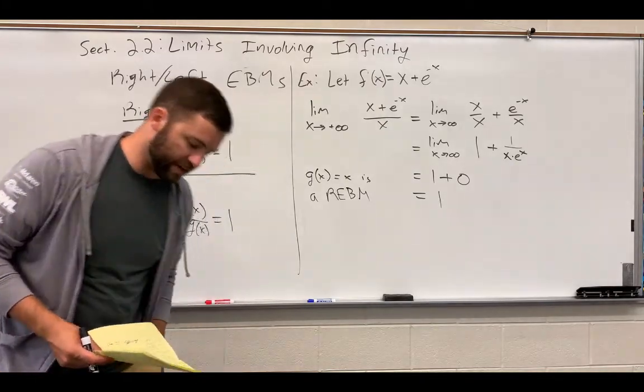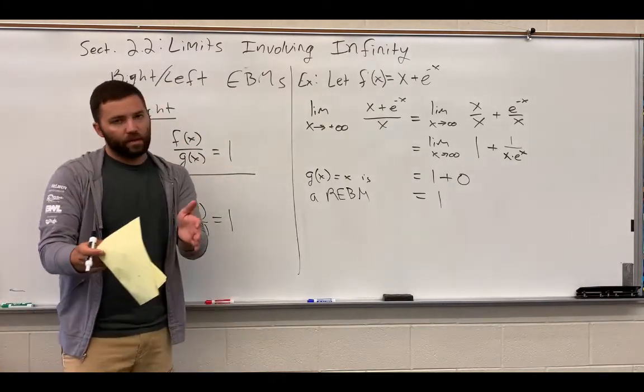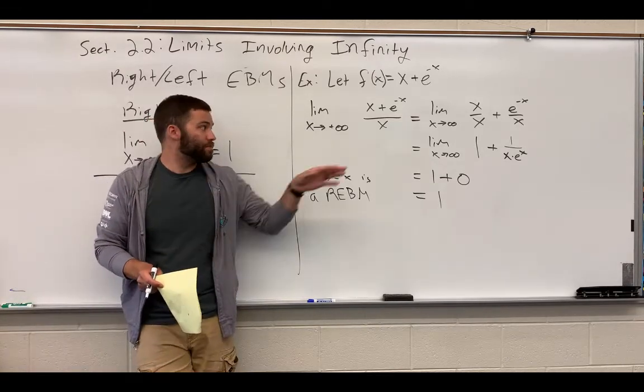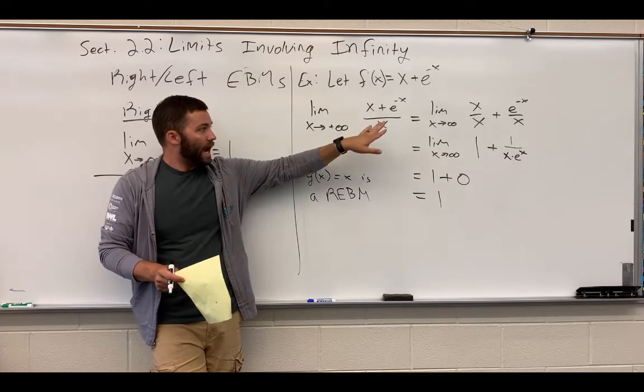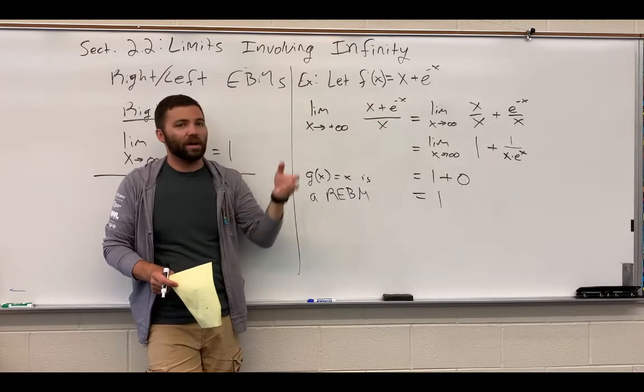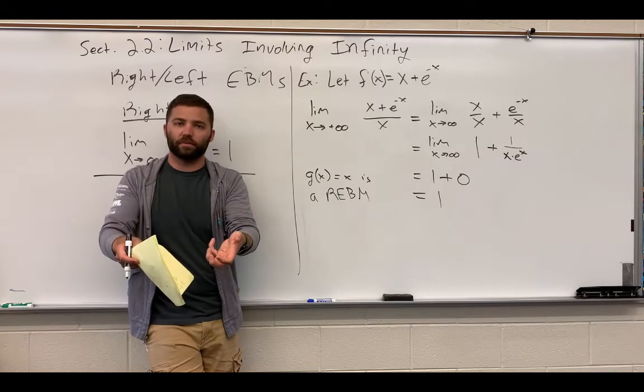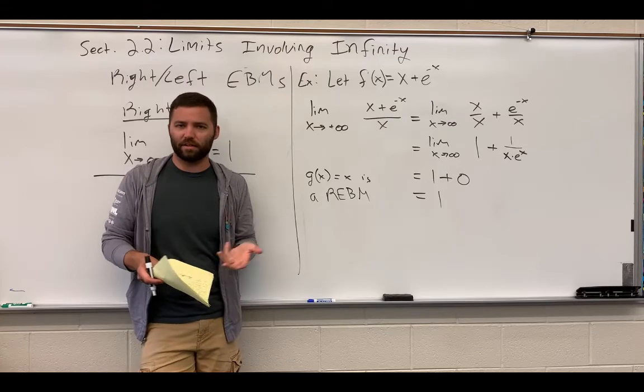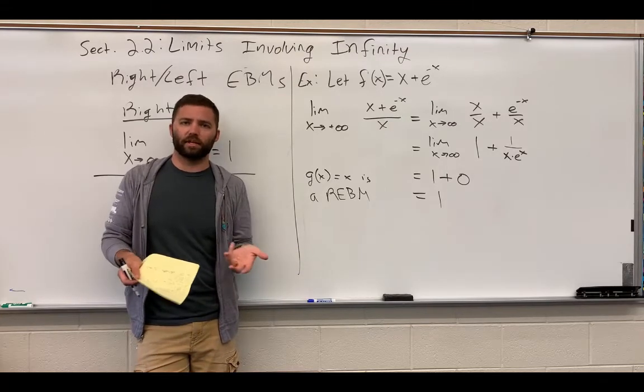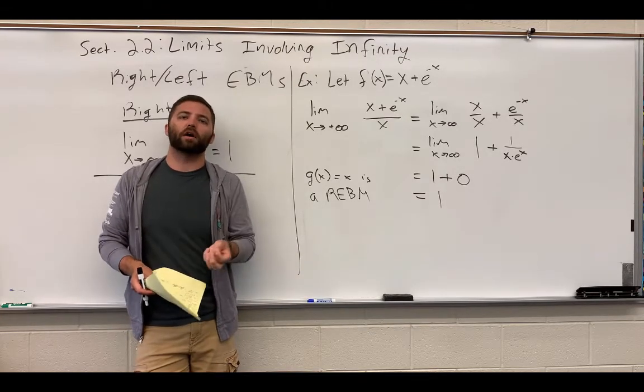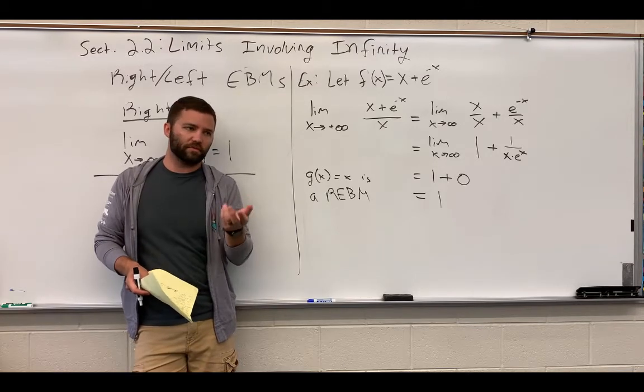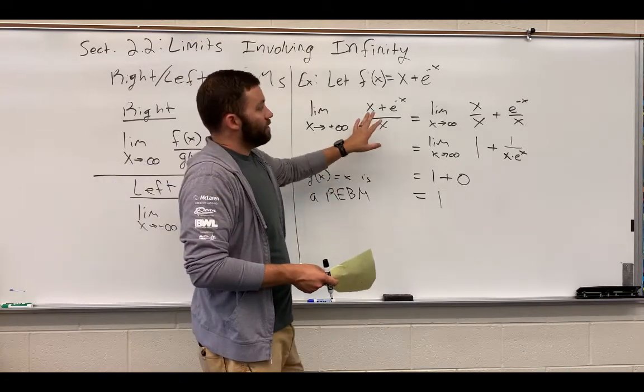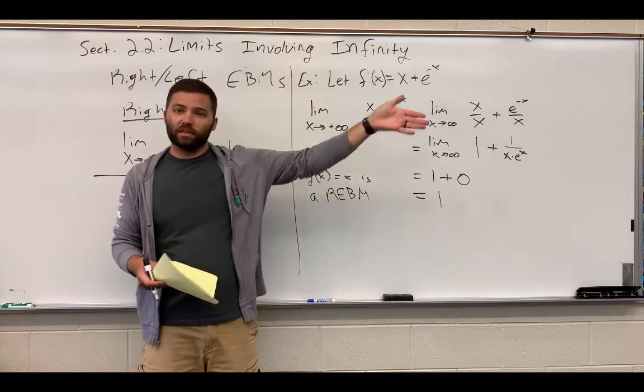Now we're going to check and see what the left end-behavior model is. Maybe we should pause here just for a second and think about how did I know to pick x? That seems to come up every year. I knew because quite often the end-behavior model will be a part of the function you're given. If you're given x plus e to the negative x, it'd be really weird if sine of x ended up modeling the end of the function. So it's probably going to be a part of the function. I always start with looking at the function, which pieces might model the end.